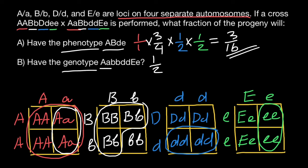What is the probability that progeny are going to be homozygous recessive for gene B? As you can see, the probability is one-quarter. So we multiply by one-quarter. And for gene D, homozygous recessive, as you can see, 50 percent — so times one-half.